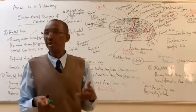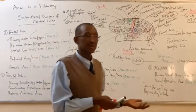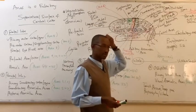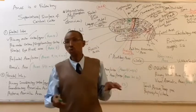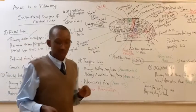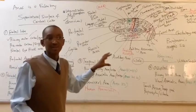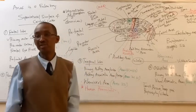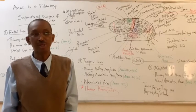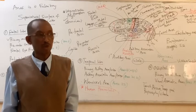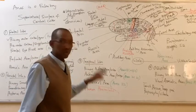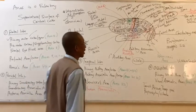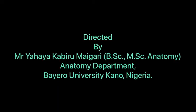The parietal lobe is mainly for sensation and some aspects of language understanding and taste sensation. The frontal lobe has a multitude of functions. We have now discussed the three or four important areas of the superior lateral surface of the cerebral cortex. What is important next is what we call the human homunculus.